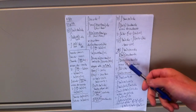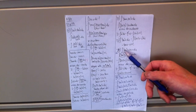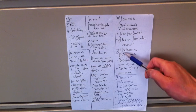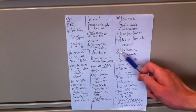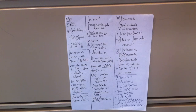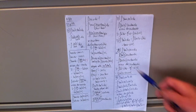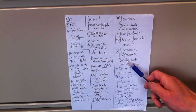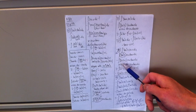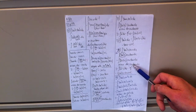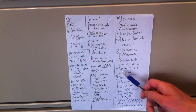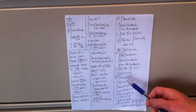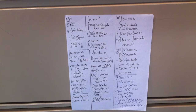Problem 27: integral of tan³(x) sec(x) dx. I can extract a sec(x)tan(x), rewriting as tan²(x) · sec(x)tan(x) dx. I want the remaining expression to only involve secant, so I replace tan²x with sec²x - 1. The integral becomes (sec²x - 1) · sec(x)tan(x) dx. Let u = sec(x), du = sec(x)tan(x) dx, giving integral of (u² - 1) du = u³/3 - u + C = (1/3)sec³(x) - sec(x) + C.